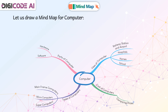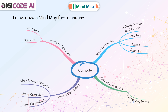Let us draw a mind map for computer. The central topic is Computer. Its parts include hardware and software. The uses of computer include railway station and airport, hospitals, homes, and schools.